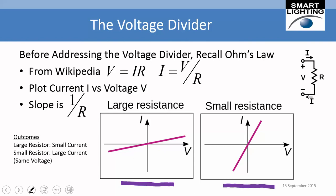A large resistor means small current; a small resistor means large current at the same voltage. Importantly, whenever we have a big resistor, the current flowing through it has a lower ability to charge a capacitor compared to when the resistor is smaller.